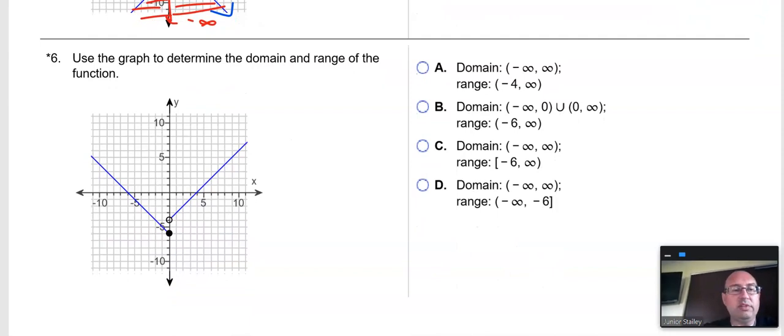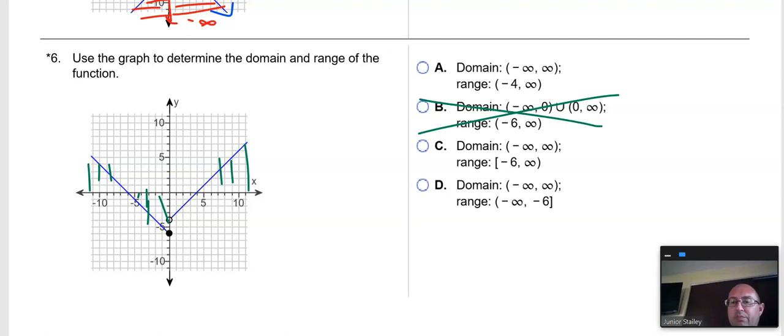Whew! Man, this is a heavy-duty week on some stuff. Use the graph to determine the domain and range of the function. All right, so, looks like if you start pushing everything on the x-axis, you're going to get negative infinity to infinity. So, that'll get rid of choice B. And it looks like it has a closed bracket at negative 6.